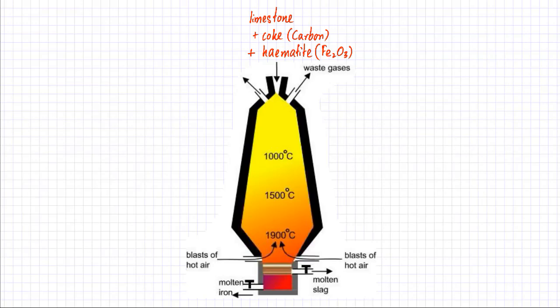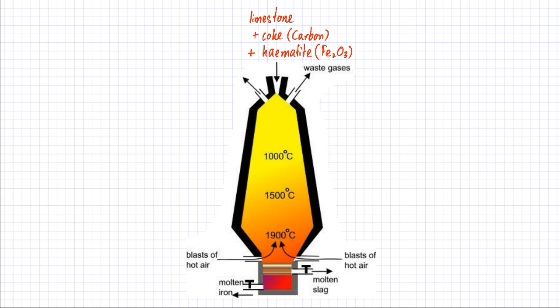This in front of you is a blast furnace which is used to extract iron from its ore. There are three things added to this blast furnace: number one is hematite — you add iron ore which contains Fe2O3. Then you add carbon to it — coke. And the third thing that you add is limestone, formula CaCO3. I'm going to tell you the purpose of each of them in a while.